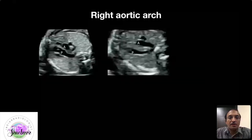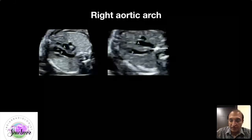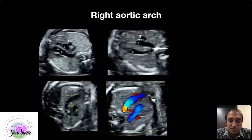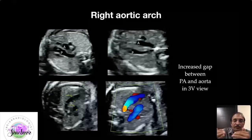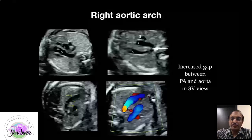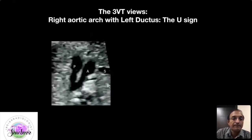Then we have right aortic arch. To compare the two pictures: S is superior vena cava, A is aorta, and P is pulmonary artery. In right aortic arch there is an increased gap between the aorta and pulmonary artery, because normally the aorta moves leftward toward the PA in the left arch, but in the right arch it stays on the right side. This increased gap between the aorta and the PA is a very useful clue for right aortic arch.